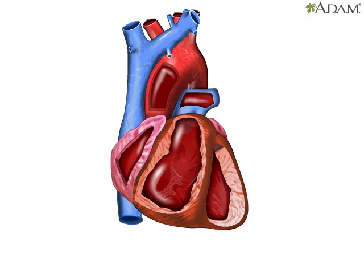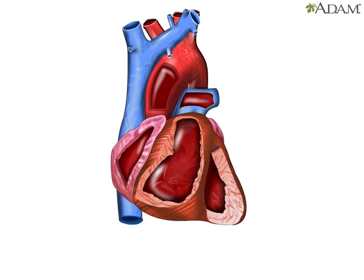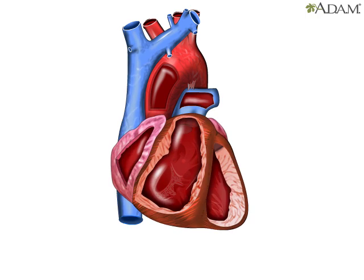Beneath the tough fibrous coating of the heart, you can see it beating. Inside the chambers are a series of one-way valves — these keep the blood flowing in one direction.